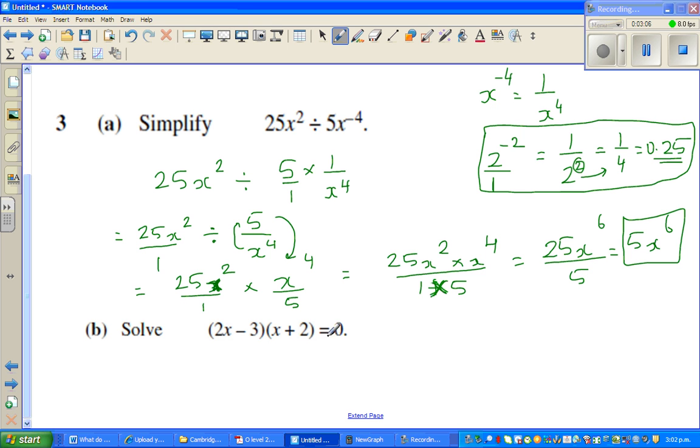Next question. Solve this. So this is a quadratic equation. I'm going to expand this. Now this is based on a very simple fact. If a times b is equal to 0, when can two numbers, the product of two numbers be 0?